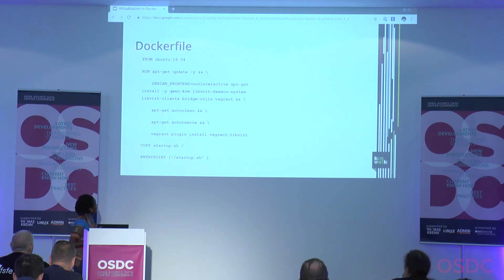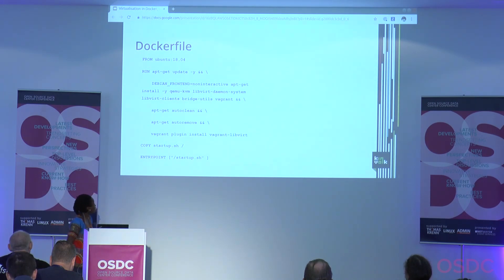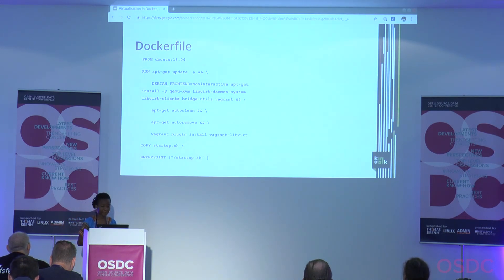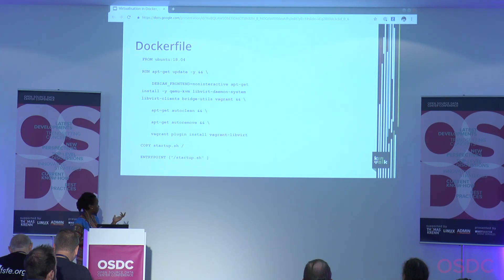This is a sample Dockerfile that installs the tools we need. It's based on Ubuntu, so some packages might be different for other distros, but this should give a general idea. For the packages, we're installing QEMU/KVM as the backend. Libvirt is a toolkit for managing virtualization platforms. Bridge Utils provides a bridge from your network to the virtual machines. Vagrant-Libvirt is a plugin that adds the Libvirt provider to Vagrant.